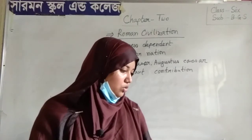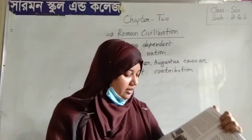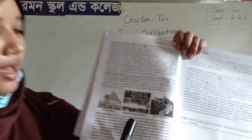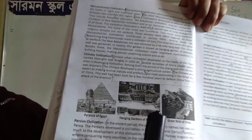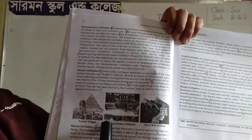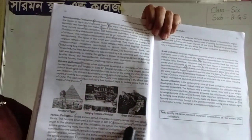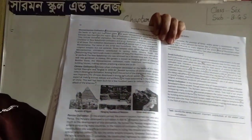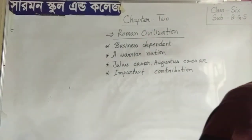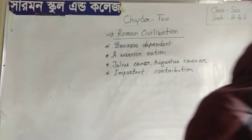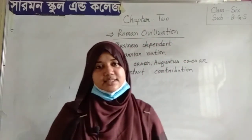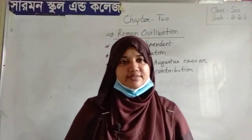Open your book and go to page 18 — there are some pictures here, including the Hanging Gardens of Babylon and the Great Wall of China. Okay students, now I am going to finish our class today. I hope you understood this class. Please keep practicing. Stay home and stay safe. Thank you.